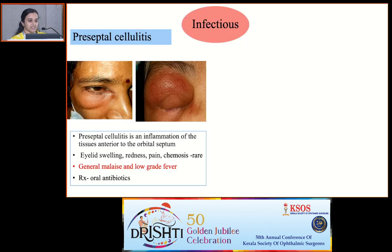First, about infectious causes. Preseptal cellulitis is an inflammation of the tissues anterior to the orbital septum, which is characterized by erythematous painful lid edema. Sometimes it can be associated with chemosis or low grade fever also.